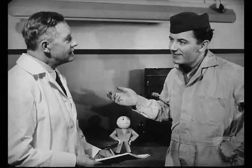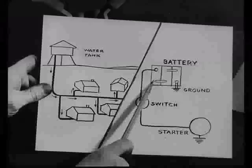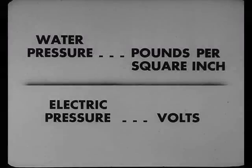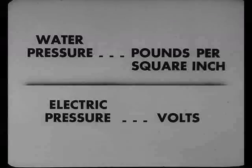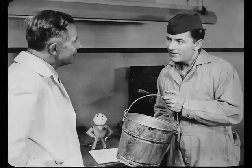What is this? A lesson on the city water system? I thought you guys were talking about electricity. We are, Bill. Take the water tank — that's where we get our water supply. For the current in our car, we get our supply from the storage battery. The pressure which makes electricity flow through wires is measured in volts. Volt is just another term for pressure.